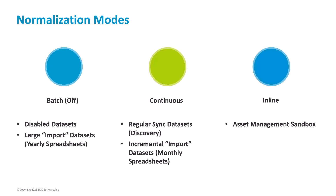The third mode is inline normalization. In this mode, CIs are normalized any time they are created or modified in CMDB. Customers mostly use this mode for sandbox datasets.